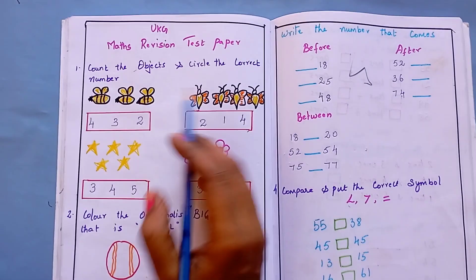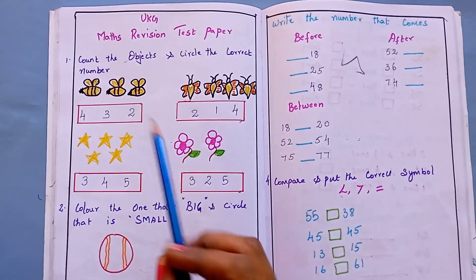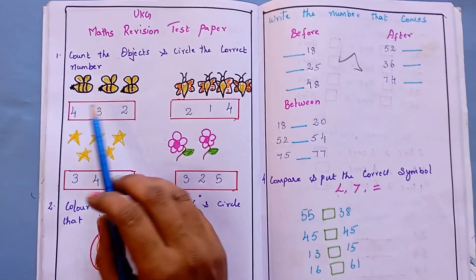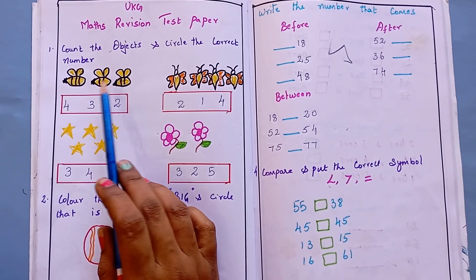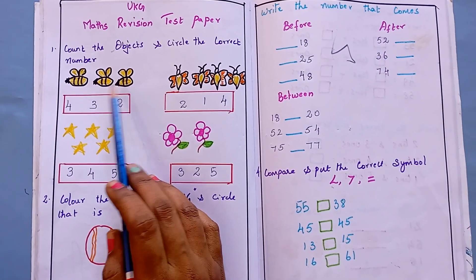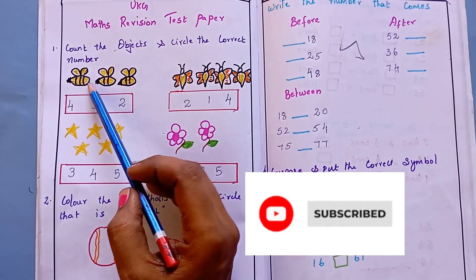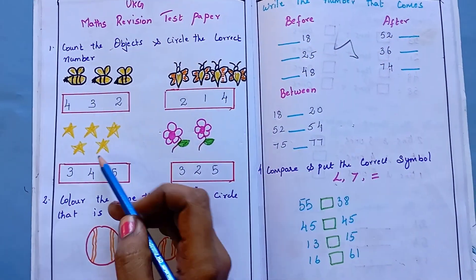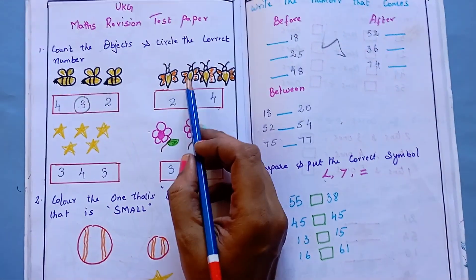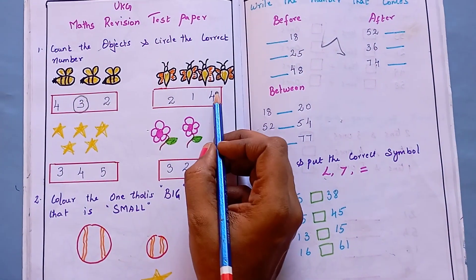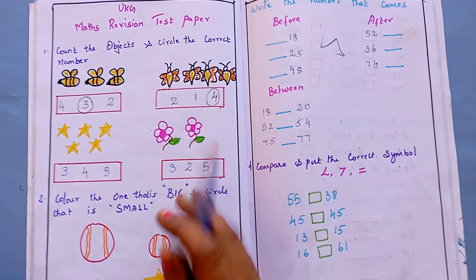The first question is: count the object and circle the correct number. In this worksheet, I have drawn some pictures. You count the pictures — this is 1, 2, 3, so here it is 3. Then 1, 2, 3, 4 — here it is 4, so they have to circle 4. They have to count the objects and circle the correct number.